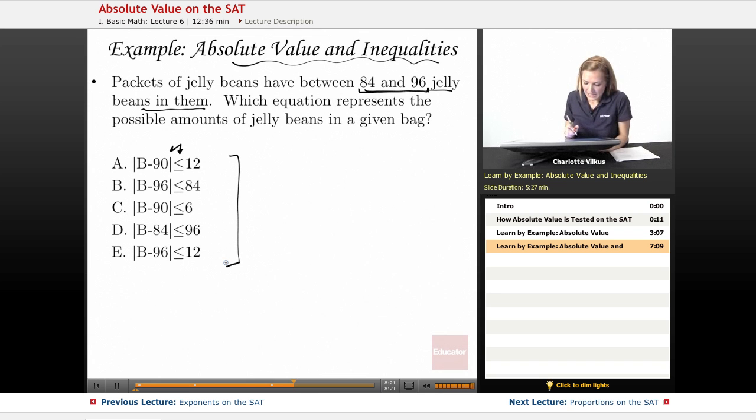So here the thing is we take a variable, so here they used b all the way through. Obviously when we're just making up our own variable it doesn't really matter what it is. If you were given something like this you would just use whatever variable the SAT had already given you to use. So here we're using b for jelly beans probably.